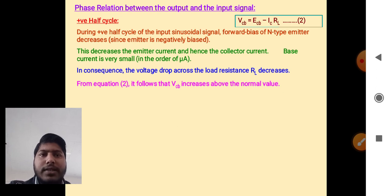As a consequence, the voltage drop across the load resistance rl decreases. From equation 2, it follows that vcb increases above the normal value. So the output signal is positive for positive input signal.